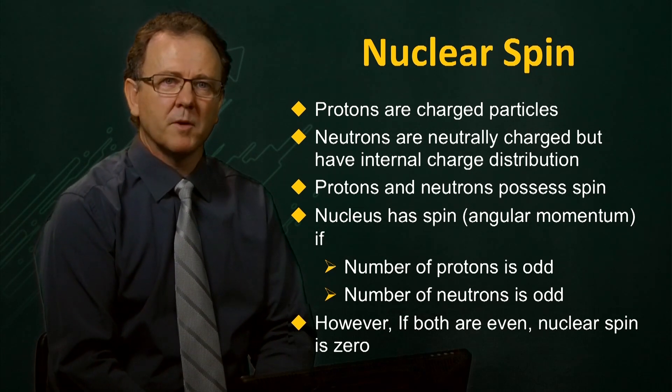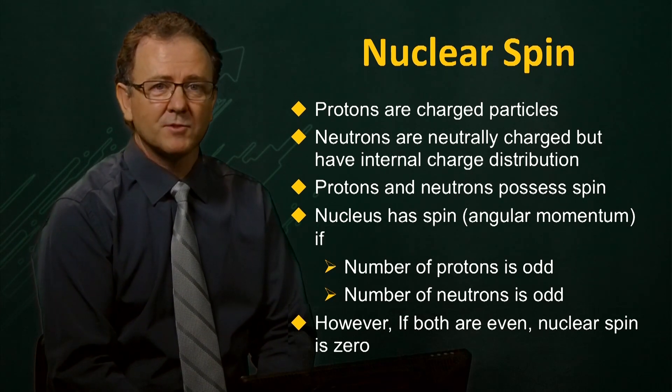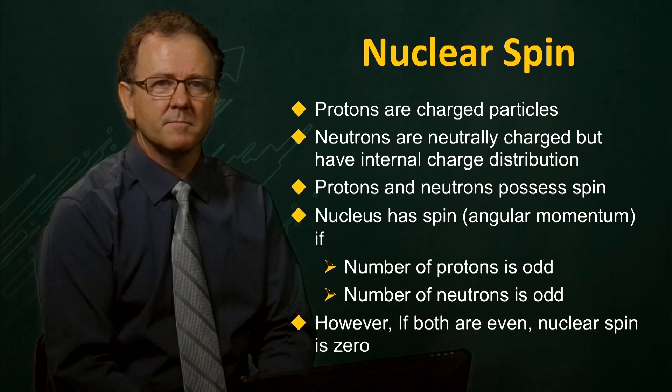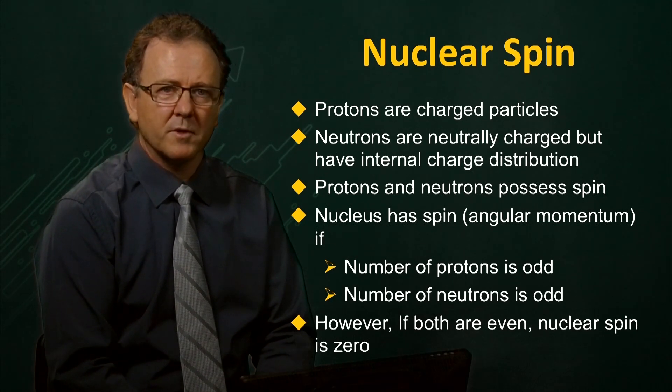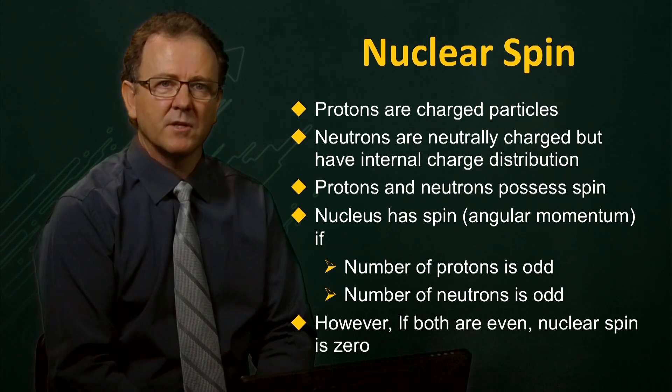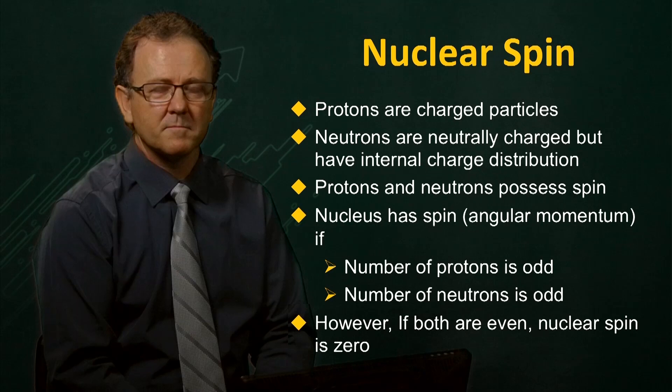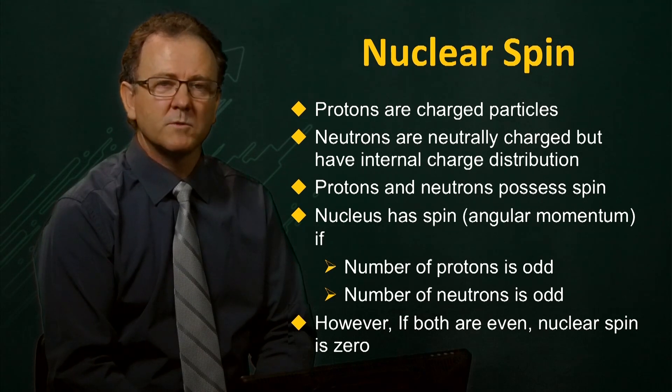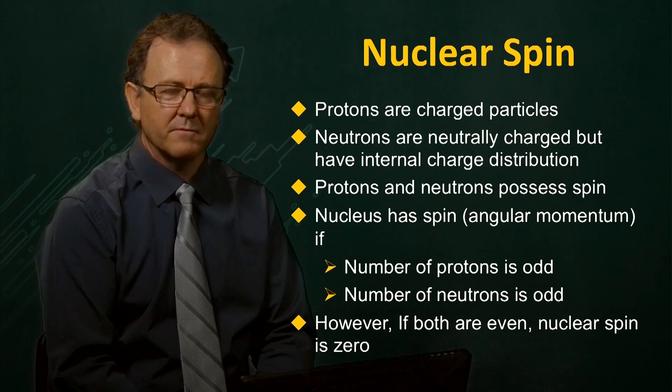Since the average human body is approximately 60% water and water is made up of two protons and one oxygen atom, by far the most abundant spins within the body are water protons, and it is these nuclei that we usually detect in an MRI scan. For this reason, we will refer only to the simple proton as the nucleus spin from now on.